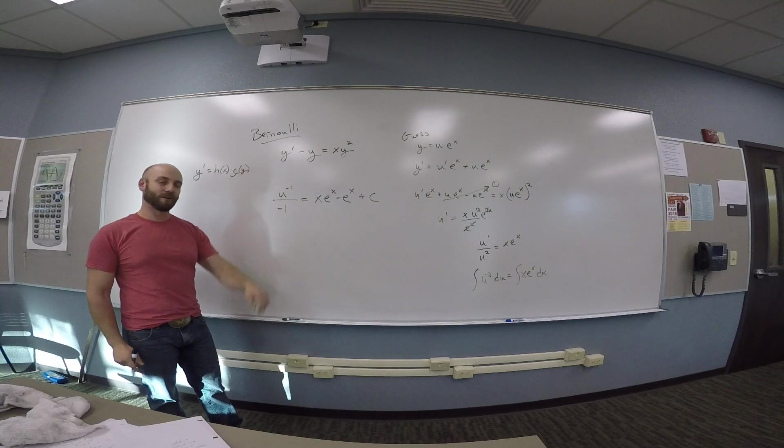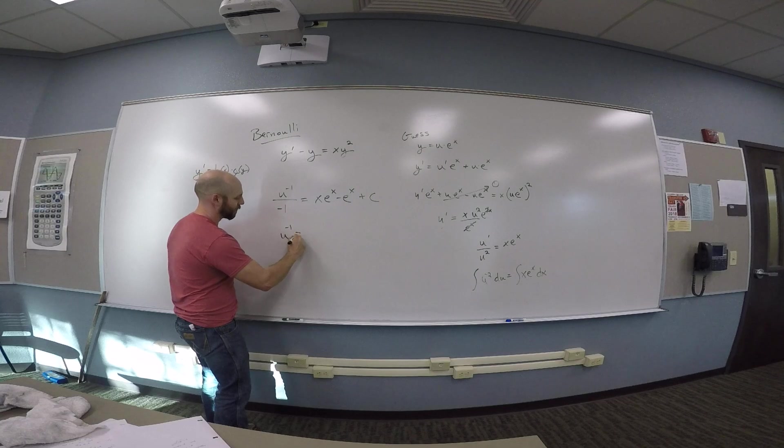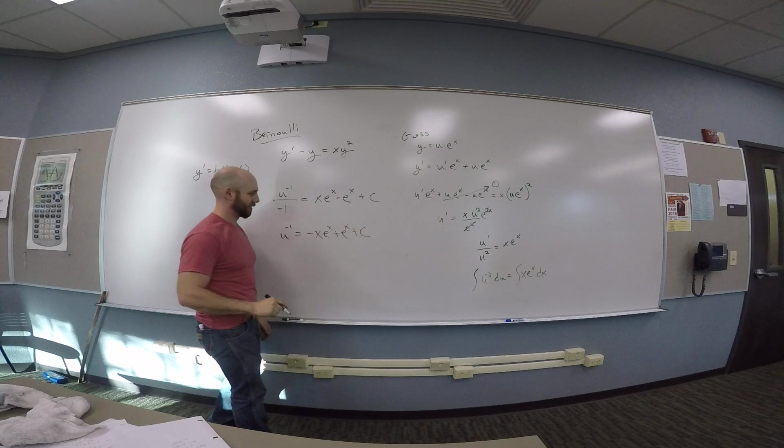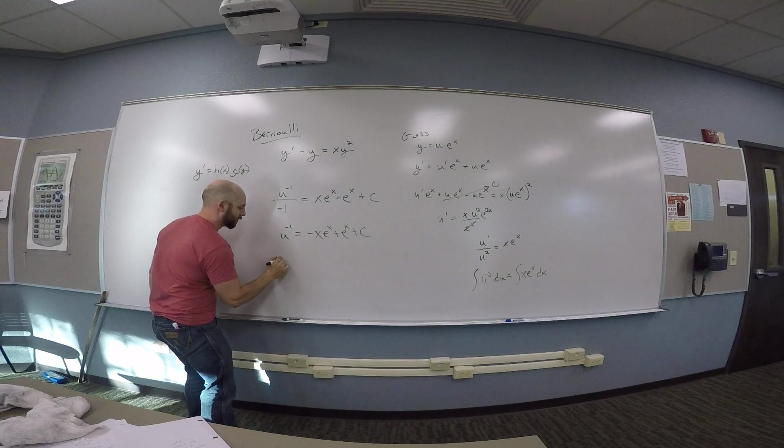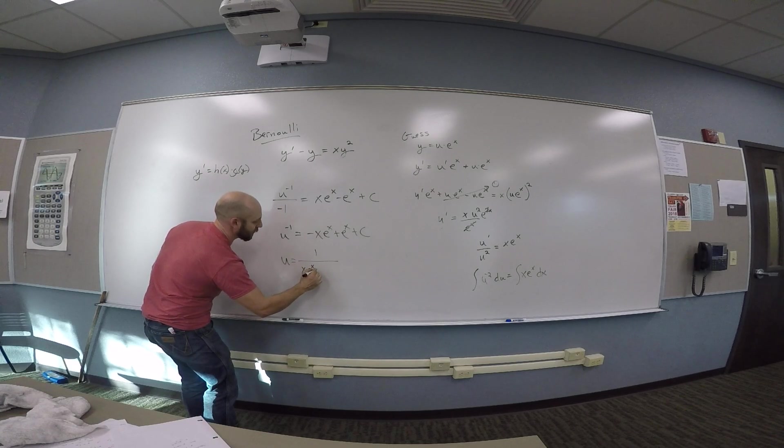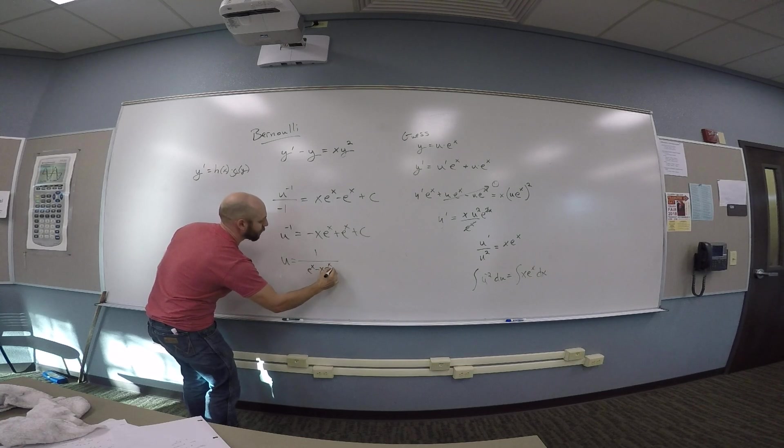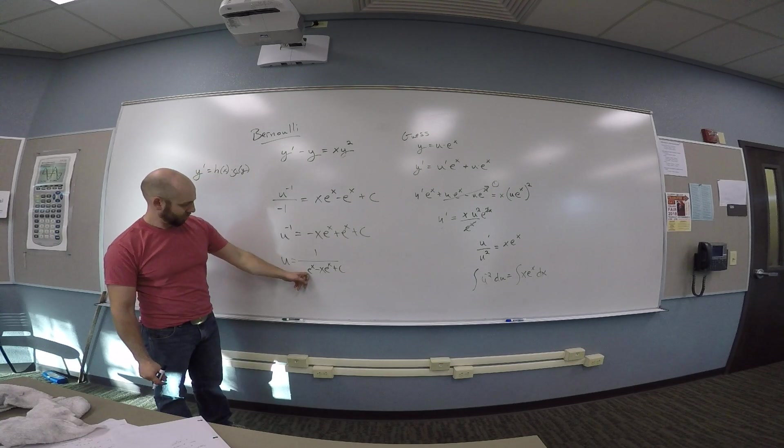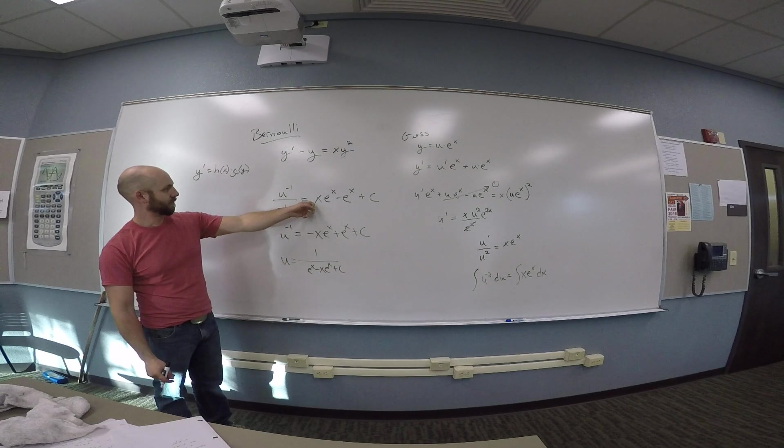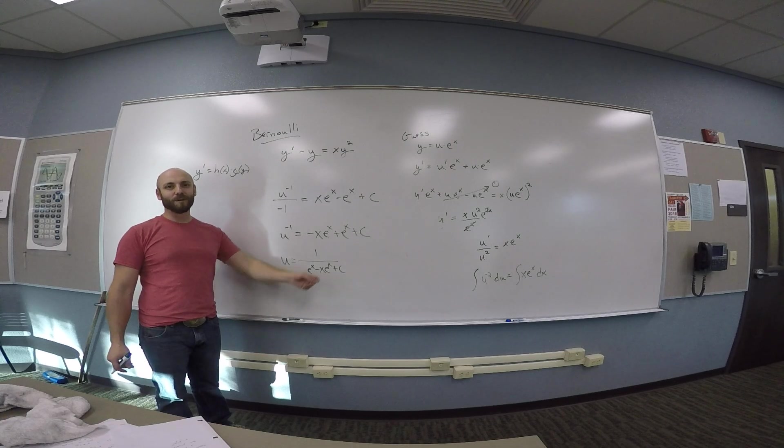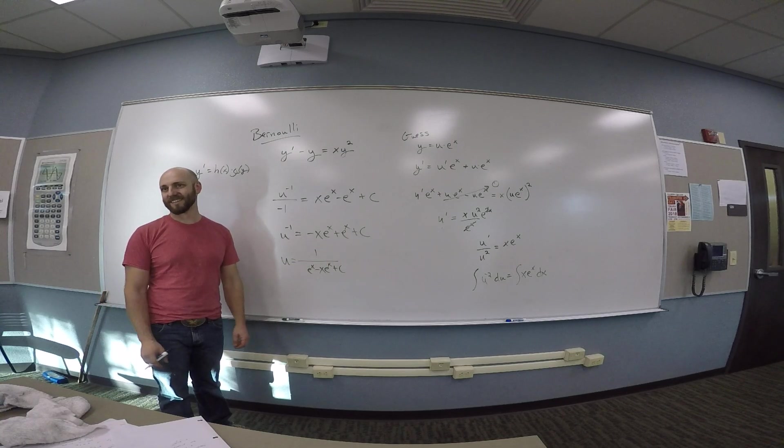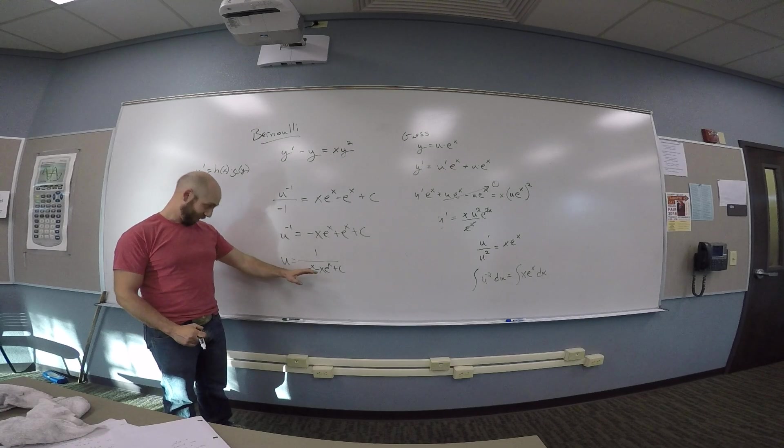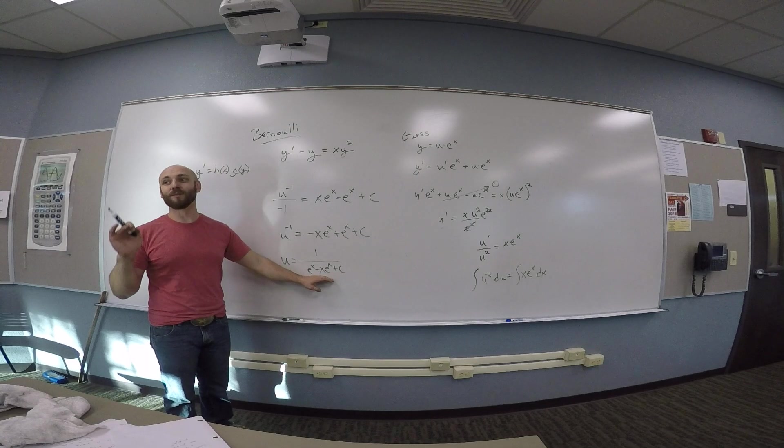And so then you multiply it through. And then you'll have to flip things over. So you'll have u to the minus 1 is minus x e to the x plus e to the x plus a constant. And then 1 over both sides. You've got u is 1 over e to the x minus x e to the x plus a constant. And then is it a negative? Yeah. Did you apply the negative to the whole? No. They just flipped the order. I didn't flip the constant because it's a constant.